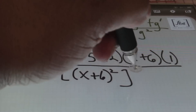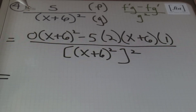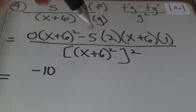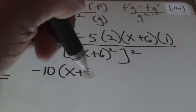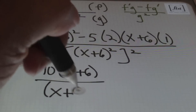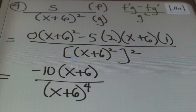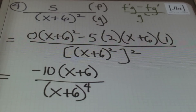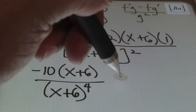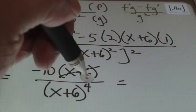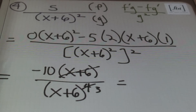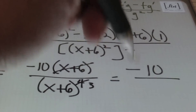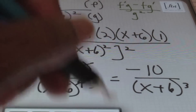Since zero times anything is zero, I'm left with negative 5 times 2 times 1 times (x + 6), over (x + 6) to the fourth power — which gives me negative 10(x + 6) in the numerator over (x + 6) to the fourth power in the denominator. I can simplify: (x + 6) to the first power in the numerator cancels with one factor in the denominator, leaving (x + 6) to the third power in the denominator. So the result is negative 10 over the quantity (x + 6) to the third power.